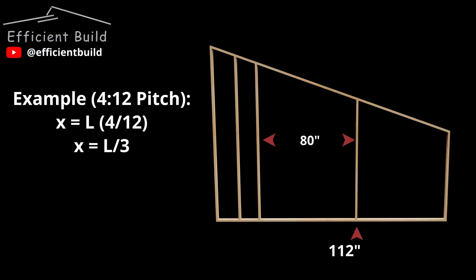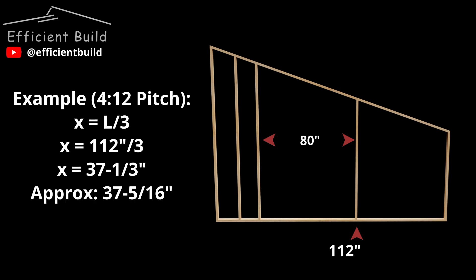Now let's take for example a 4:12 pitch. We plug in our numbers and we end up with an equation of X equals L over 3. In this case L is 112 inches, and that gives us 37 and 5/16 inches if we round it to a tape measure value.